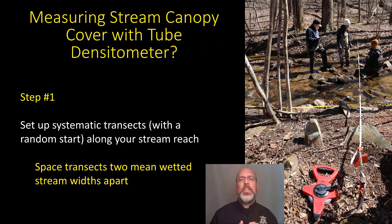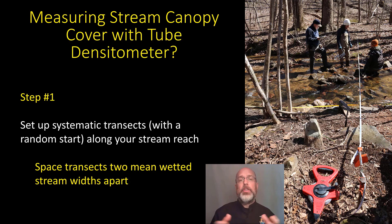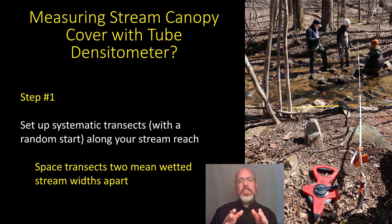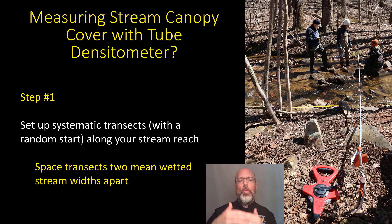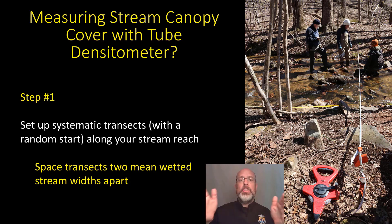In step one, you want to set up systematic transects along your stream reach with a random start. You're probably already doing some other stream habitat measurements, like pebble counts or cross sections, and this might be part of that process. In this case, you want to space the transects two mean wetted widths apart throughout the reach. So whatever your wetted width is from bank to bank, you want to double that and space your transects out accordingly.